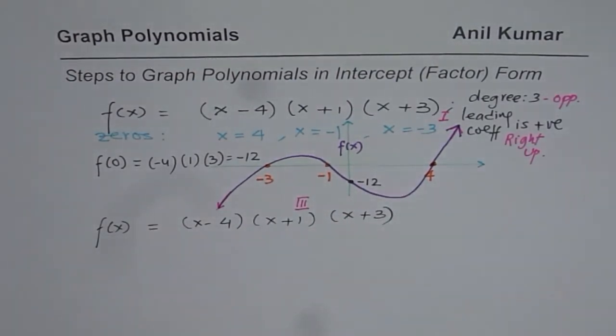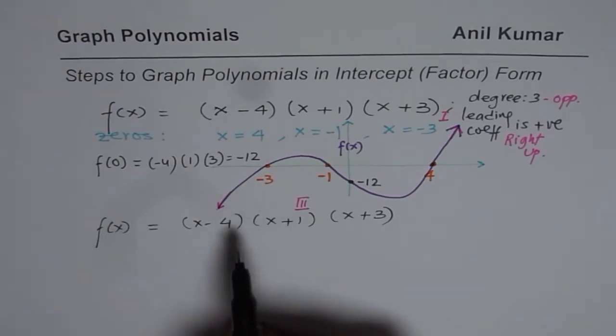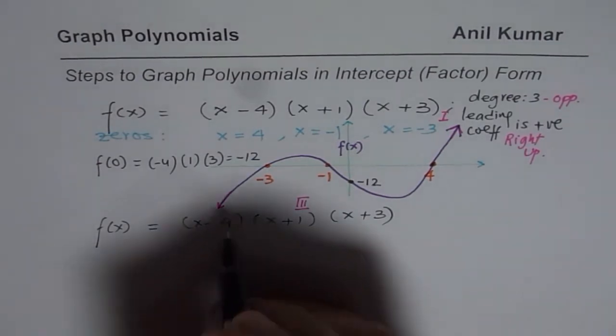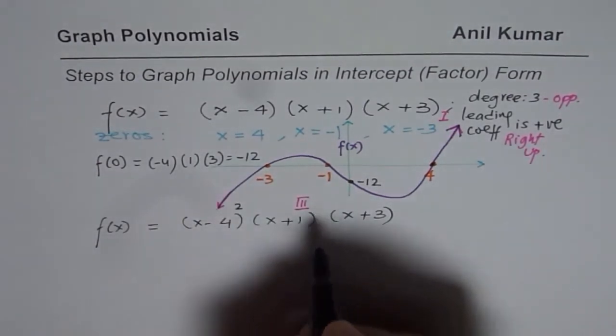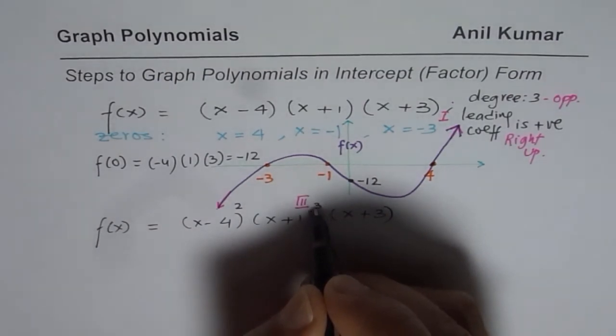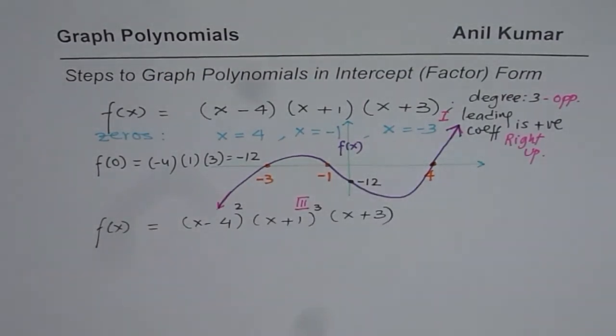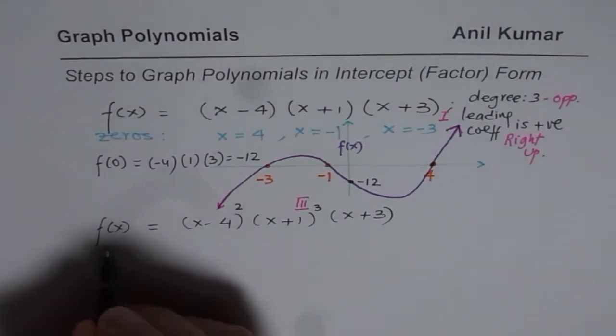Now the change I am going to make is that in one of the zeros, I will make it square. So let me make one of the zeros as square. Let this be square. And the other zero, I will kind of make it cube.